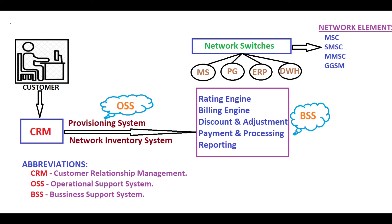Payment Gateway is an individual module used by customers for paying bills. Next comes ERP - Enterprise Resource Planning - where resource-related information such as service provider resources and finance-related data are stored. After that comes the Data Warehouse, which is a collection of databases, feeding into BSS - Business Support System.